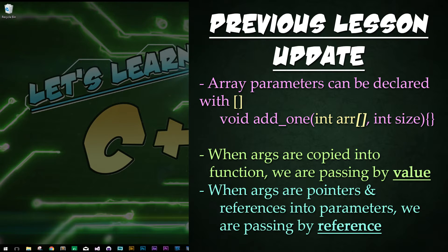I want to do a quick update on the previous tutorial I created. We showed that arrays can be passed in by pointers. Arrays can also be passed into a function by using the square brackets in the parameters — so we could type void add1, open parentheses, int array, variable name r, then square brackets to indicate that it is an array instead of a pointer. Both work fine; this is just clearer to the user that they're going to be passing in an array. When a copy is made of arguments, we're passing in by value. When we pass in a pointer or reference into a function, we're passing by reference.